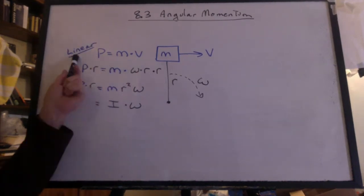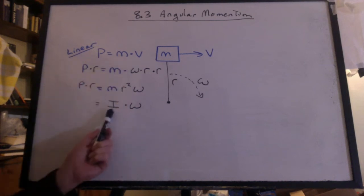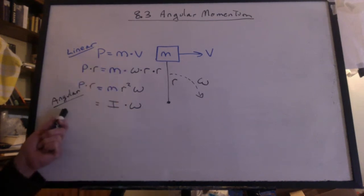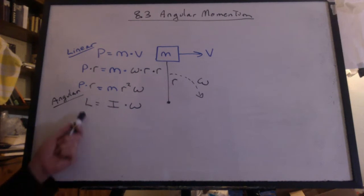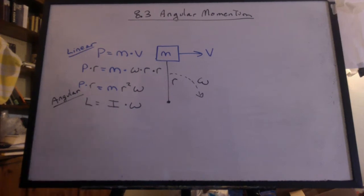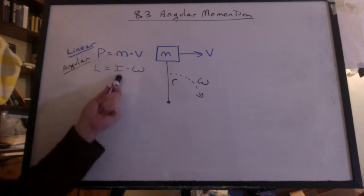This is linear momentum. And now we've converted this to angular momentum, which will be represented by the letter L. You don't have to derive it every time you use it. Just translate the letters.